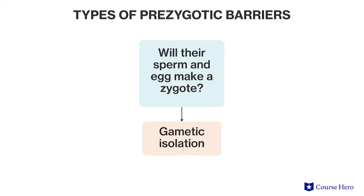Five: gametic isolation. This occurs when the sperm and egg of two organisms will not fuse to form a zygote. For example, sea urchin eggs are coated with a jelly that contains chemicals that preferentially activate sperm of the same species.